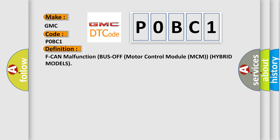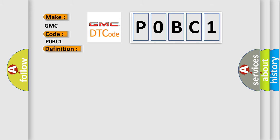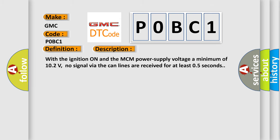And now this is a short description of this DTC code. With the ignition on and the MCM power supply voltage a minimum of 10.2 volts, no signal via the CAN lines are received for at least 0.5 seconds.